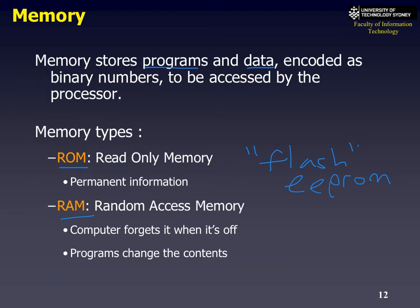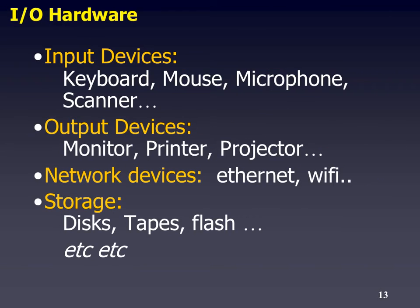Typically, your ROM might be only around 128 megabytes or so, and it's used when you boot up a computer. Some people also call this firmware. I/O devices are fairly obvious — input-output, network, and storage devices.